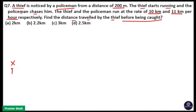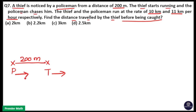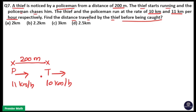So if this is the police and this is the thief, the police notices the thief at a distance of 200 meters. When the police notices the thief, the thief starts running and the police start chasing him. The thief's speed is 10 km per hour and the police's speed is 11 km per hour. Since there is a distance between them, the speed of the police must be greater than the speed of the thief — then only the police can catch the thief.